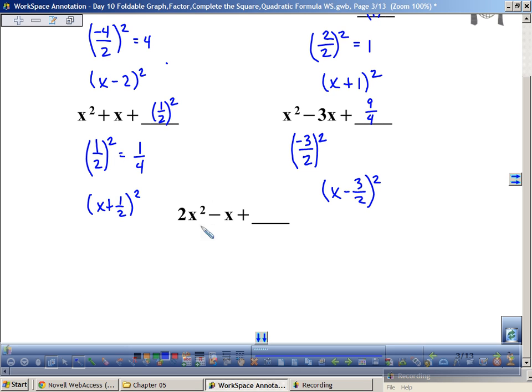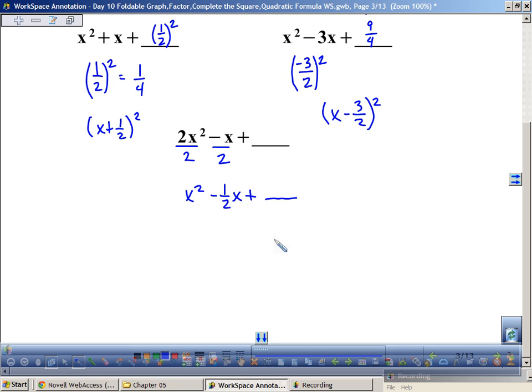This one doesn't have a coefficient of one, so let's make it. X squared minus one-half X plus blank. One-sixteenth. Good job. How'd you get one-sixteenth? Half of a half is usually written like this, right? Half of a half squared, which is negative one-fourth squared, which is one-sixteenth.